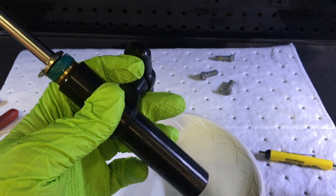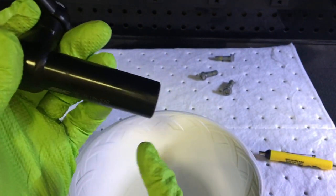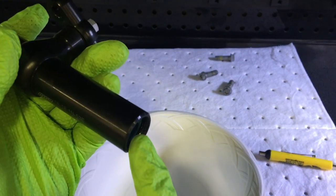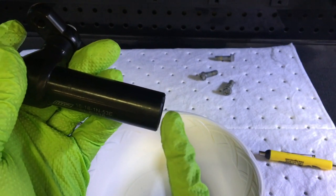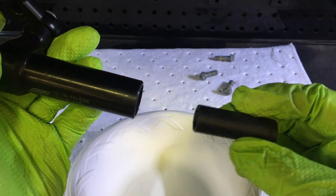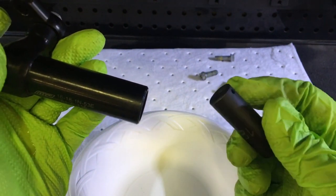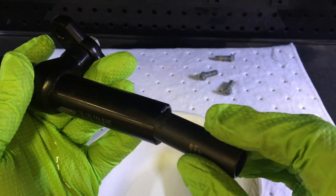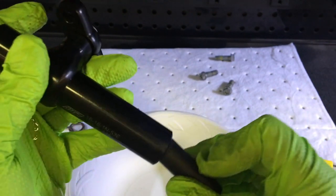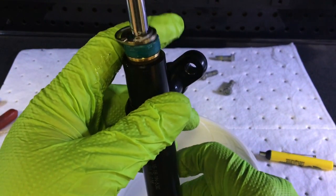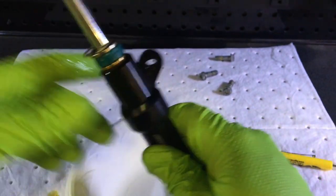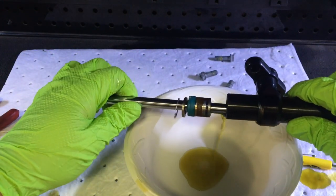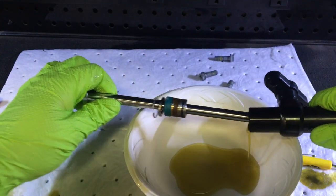You'll have the end of this sticking out about that far and it'll feel like it doesn't want to go any farther. That's just because you're bottomed out on this other seal. You'll have to be very gentle, use a soft hammer, brass punches, whatever you need to do to get it out without damaging anything.